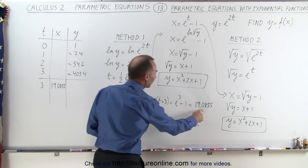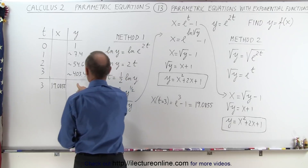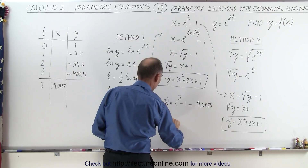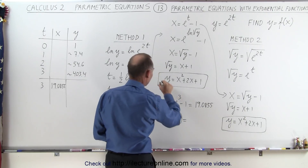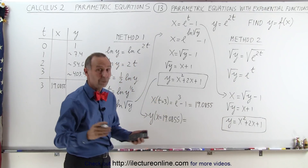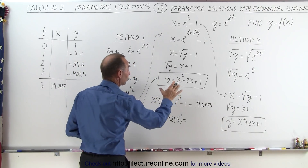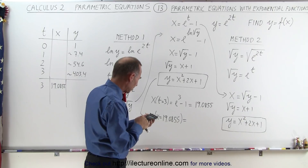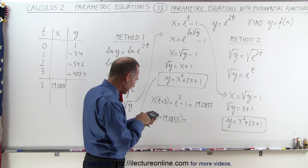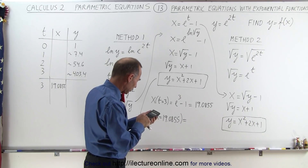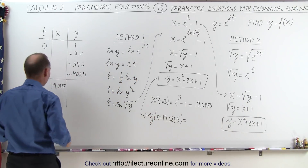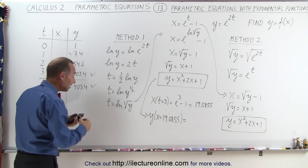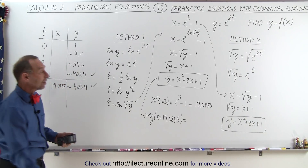Now we plug that value in to check. So y when x equals 19.0855 equals 19.0855 squared plus 2 times 19.0855 plus 1, and we get approximately 403.4. You can see we get the exact same value, which means this is the correct equation representing the two parametric equations we were given.